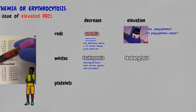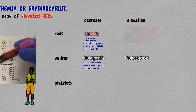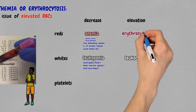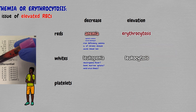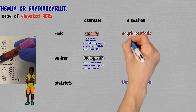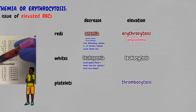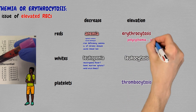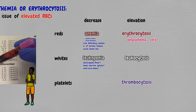This is the crux of the problem. The correct name for an elevated red cell count is erythrocytosis, just like an elevated white count is leukocytosis and elevated platelets is thrombocytosis. If we call it polycythemia, it's going to anchor our minds in polycythemia vera, which is only one of the causes of erythrocytosis, and it unconsciously limits our diagnostic thinking.